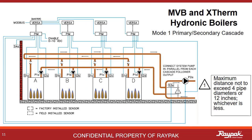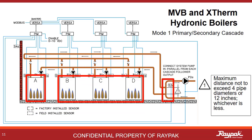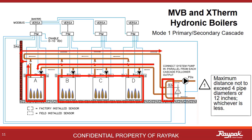This is a Mode 1 cascade system. Boiler A on the left is the master boiler, and boilers B, C, and D are the followers. All of the same decoupler concepts apply, only now they apply to the whole cascade. An important part of plumbing boilers in cascade is to use reverse return logic. The first boiler out to the loop is the last boiler to receive water back from the loop.